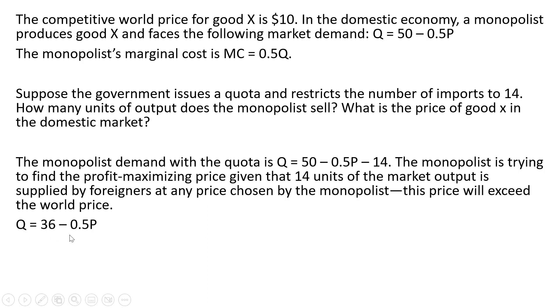Here now is the monopolist's market demand. This 36 is from 50 minus 14, which gives us 36. So after subtracting out the imports, next I'm going to solve this equation for P.